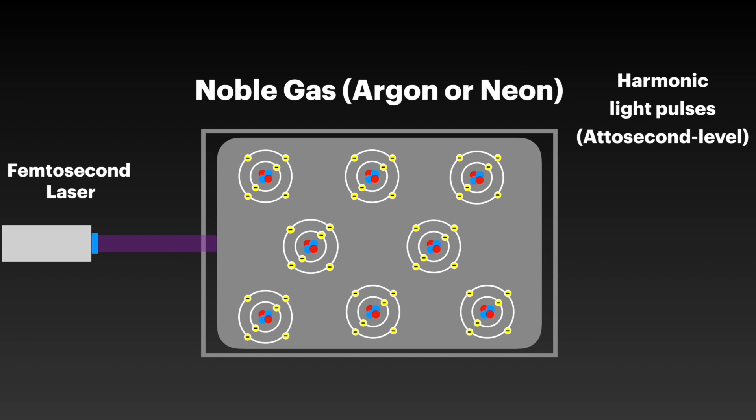These are simply multiples, aka harmonics, of the original frequency. This phenomena, called re-collision, was discovered in the 1980s by L'Huillier's team, and is essential for creating attosecond-level light pulses.